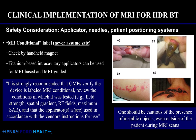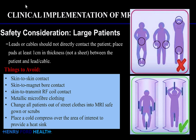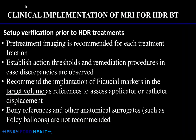Things to avoid during an MRI scan: avoid skin-to-skin contact, avoid skin-to-coil contact, avoid skin-to-RF cord contact, no metallic microfiber clothing. It is recommended that all patients change out of their street clothes into an MRI-safe gown or scrubs. We could also put a cold compress over the area of interest to provide a heat sink. These are some of the key safety recommendations provided by TG303.